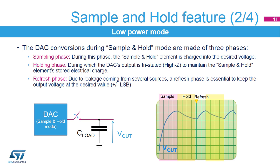The digital to analog converter can work intermittently, charge the external or internal capacitor, and be powered down while the output voltage is kept on the hold capacitor. After the refresh period, the DAC is powered back on again and recharges the hold capacitor.